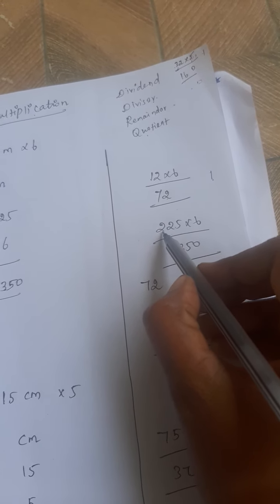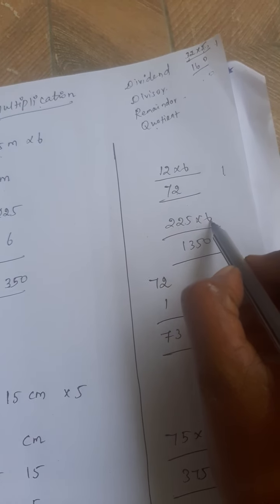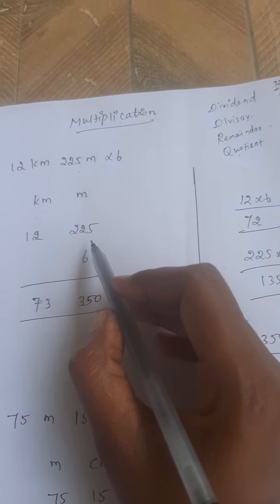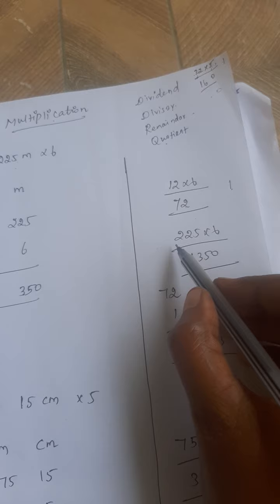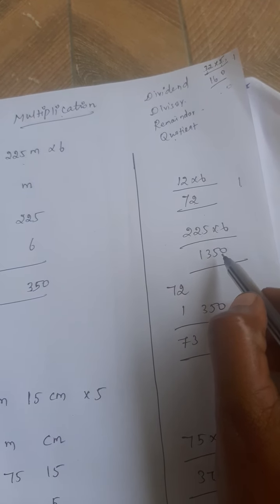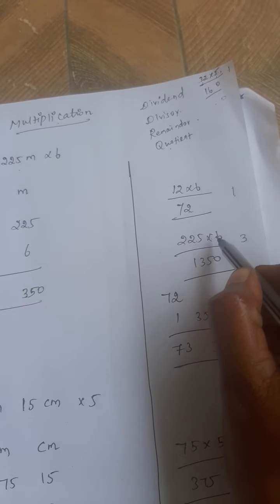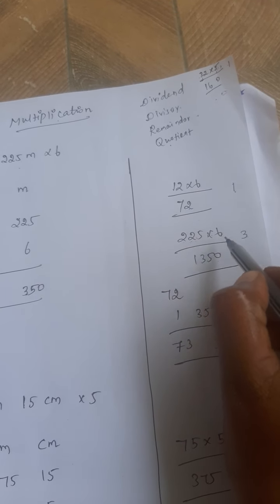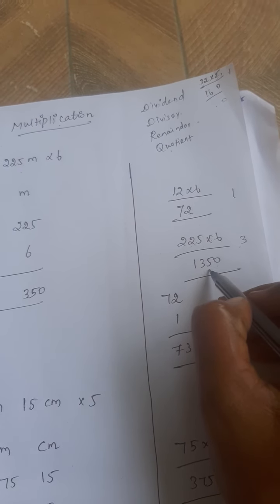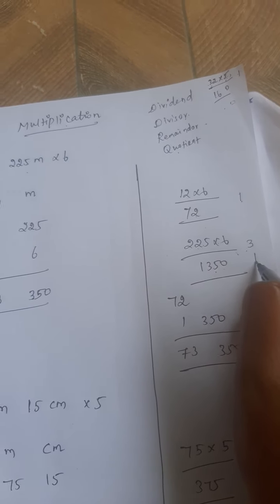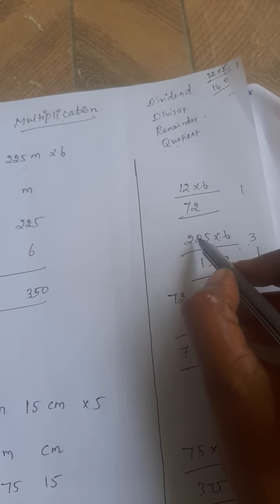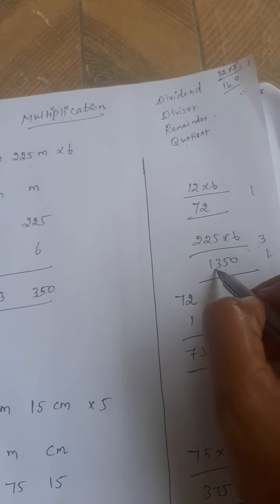And next one, 225 into 6. Here I wrote that, you know, meter value, so that also we can multiply. 5, 6 are what is the 30? I write the 0, remainder 3. 2, 6 are 12. 12 plus 3, 5. I write the 5 and remainder 1. 2, 6 are 12. And add the 1, 13.